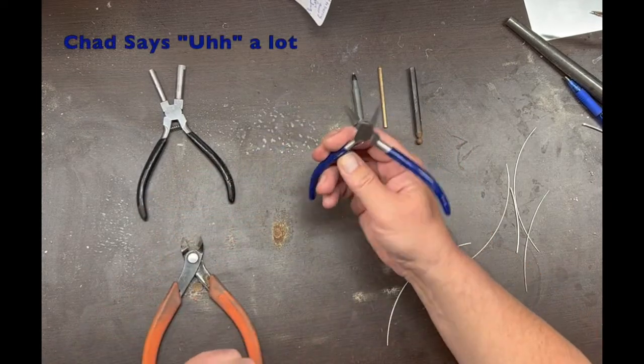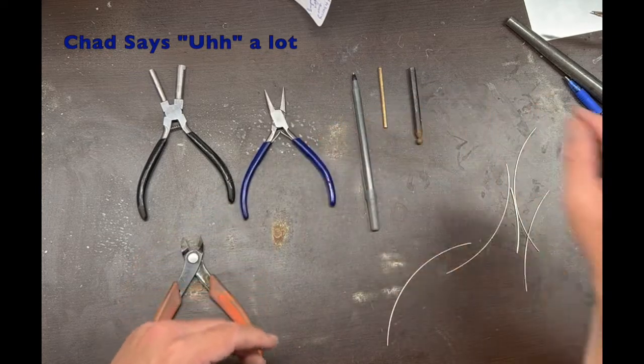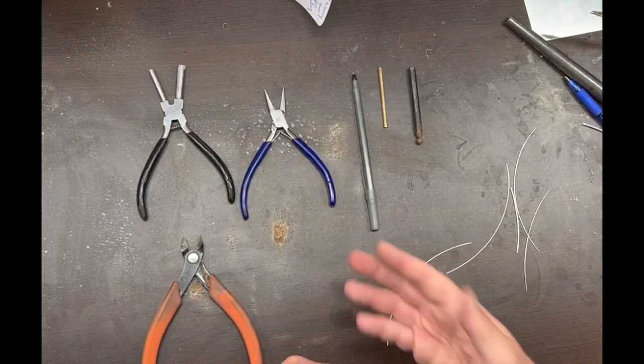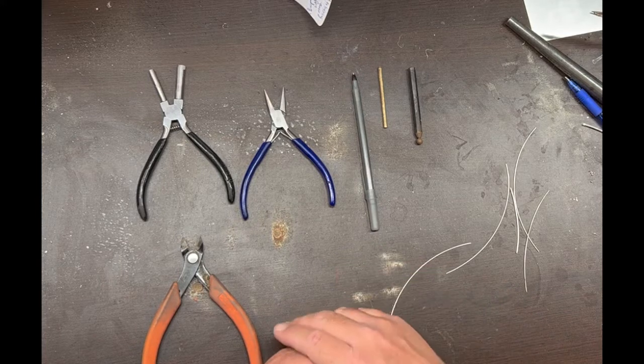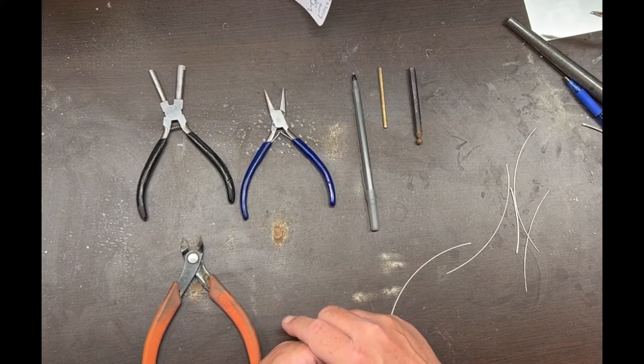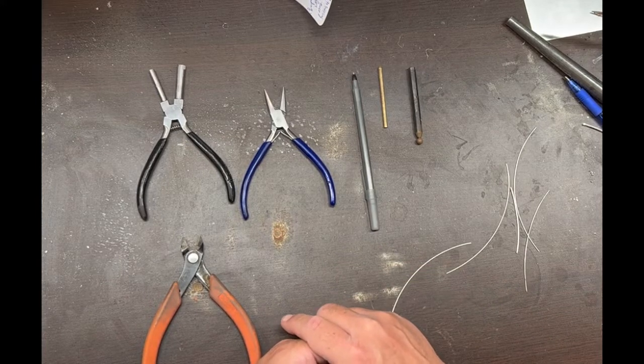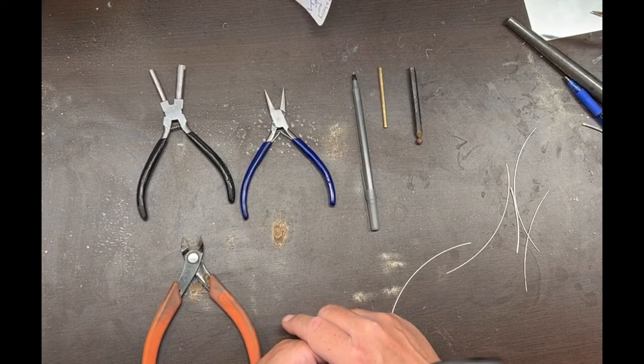You'll need a pair of needle nose or chain nose pliers, and when you're making jump rings you sometimes need different sizes, so the easiest way to do that is keep a lot of cylindrical things of different sizes around your shop.